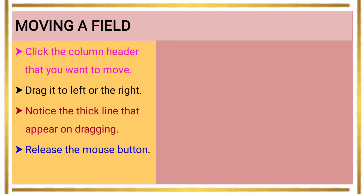After moving the field, release the mouse button. The field moves to the selected area — for example, the fourth or fifth field position — and the particular field is placed in the selected area. This is the option for moving a selected field.